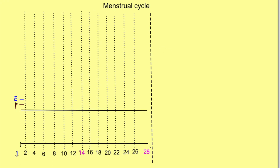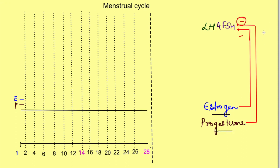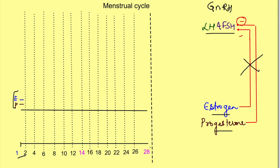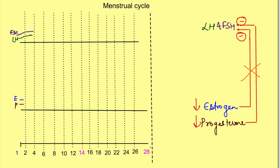We start from day 0 when the levels of estrogen and progesterone are very low. These hormones exert a negative feedback on GnRH from the hypothalamus and also on LH and FSH. When estrogen and progesterone levels are high, LH and FSH levels are low. But on day 1 these levels are very low, so they cannot exert negative feedback. Therefore with the start of vaginal bleeding — menstruation — there is a rise in the levels of LH and FSH.